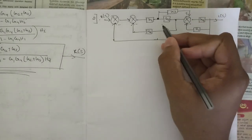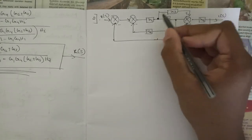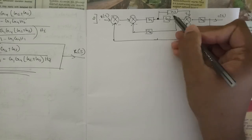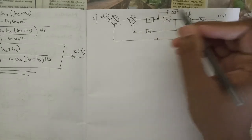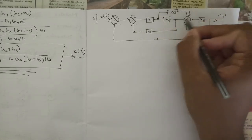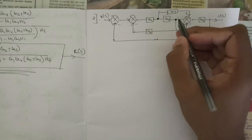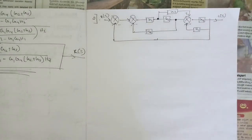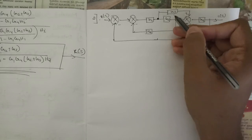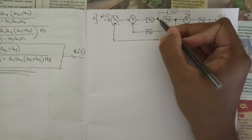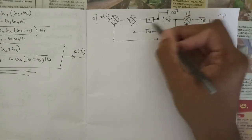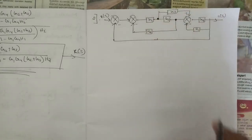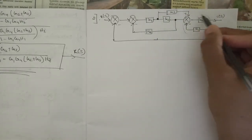Similarly, g2 and g3 share the same summing point, so they might appear to be in parallel, but no — during that path there is one more takeoff point, so we cannot say they are in parallel either. In order to make g1 and g2 in series, or g2 and g3 in parallel, we can either shift this takeoff point to one side or the other. If we shift either one, we can then treat one pair as in series or in parallel. Also, we can see there is a minor loop here that we can reduce.